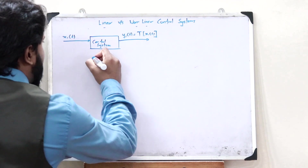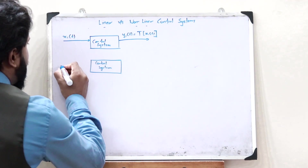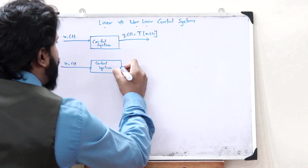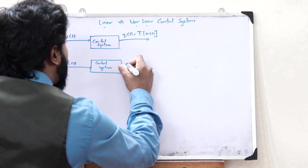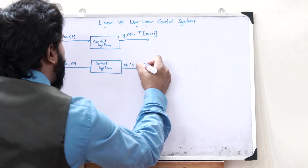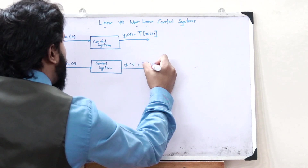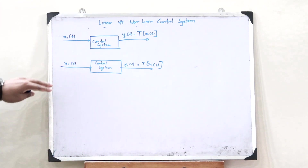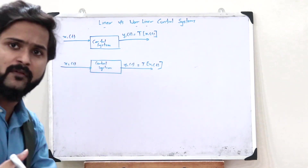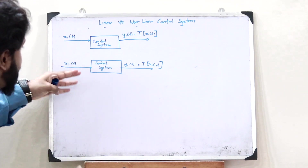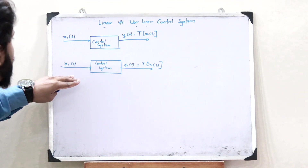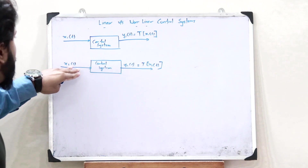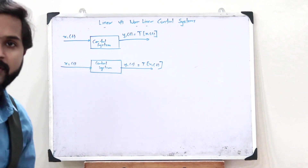Similarly, in the same control system, if we give another input x2(t), we will also get another output y2(t), which is equal to the same transform but of x2(t). So therefore, in this particular control system, be it x5(t), x7(t), or x12(t), we will get an output y12(t) equal to the transform of that particular input x12(t).